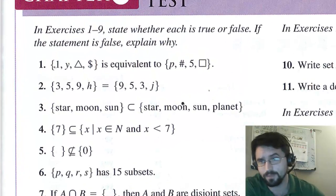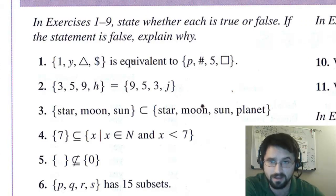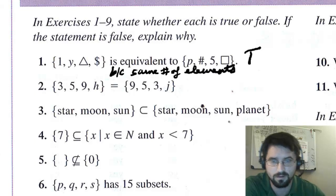The first one says the set containing the elements 1, y, triangle, and dollar sign is equivalent to this other set containing p, pound, 5, and square. And the answer is that is true. True. And why is it true? Because the cardinalities are the same. Same number of elements are in both.